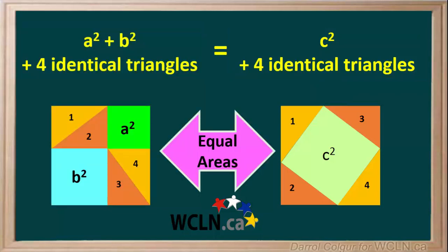And remember, the two squares have equal areas. What we'll do now is take away the four identical triangles from both sides. Because we're subtracting the same things from both sides, the two areas will remain equal to each other.